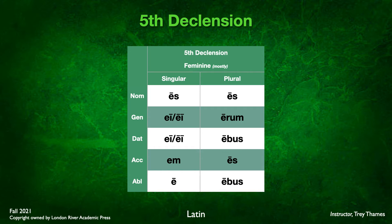Again, the dative form is identical to the genitive singular form — we saw this in first declension where genitive singular and dative singular were the same. Here we have -eī or -ēī in both genitive and dative singular. Accusative singular is -em. Ablative singular is -ē with a macron. And then the plural: -ēs, -ērum, -ēbus, -ēs, -ēbus.